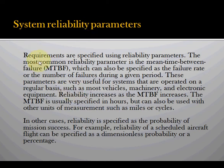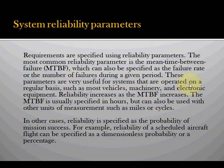System reliability parameters: requirements are specified using reliability parameters. The most common is mean time between failure (MTBF), which can be specified as a failure rate or the number of failures during a given period. These parameters are very useful for systems operated on a regular basis. Reliability increases as the MTBF increases. The MTBF is usually specified in hours. It's important to note that once you reach the MTBF, you're at a 60% failure rate.